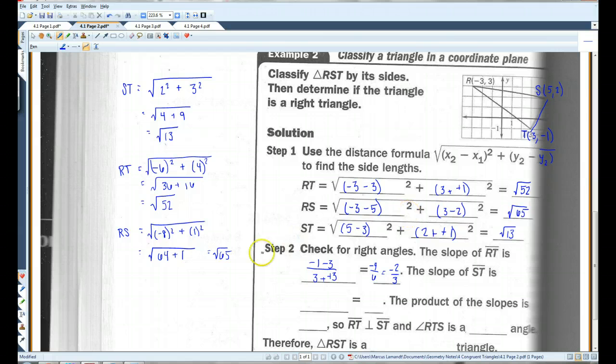The slope of ST, let's see here. The y's would be 2 minus negative 1. The x's would be 5 minus 3. 3 becomes positive. So I've got 3 over 2, positive. So notice that this and this are opposite reciprocals. So we know that this is going to be a right angle. And the product of the slopes is negative 1. They're opposite reciprocals of each other. So they're perpendicular and angle RTS is a right angle.